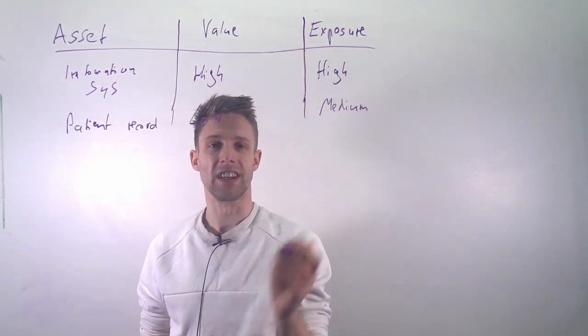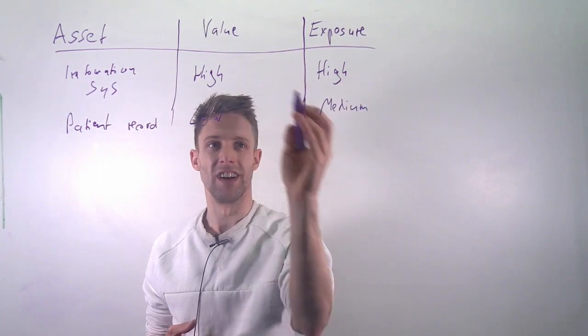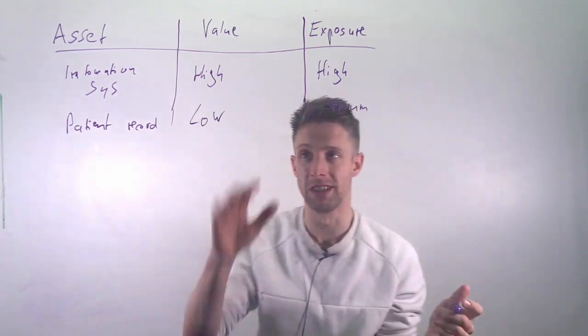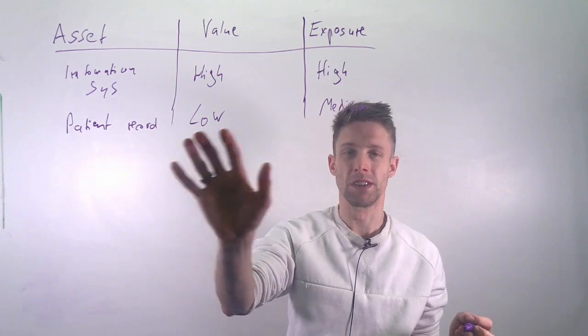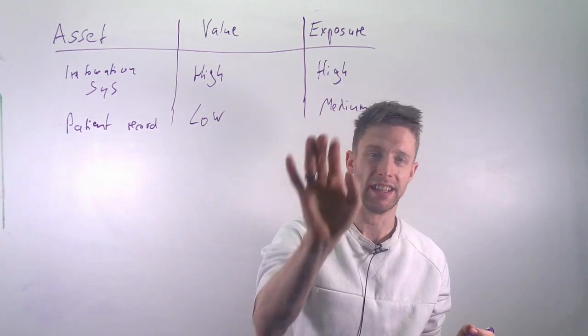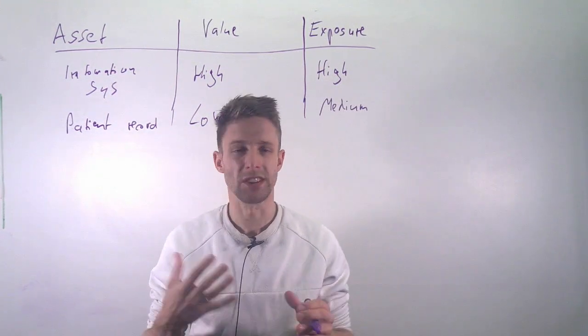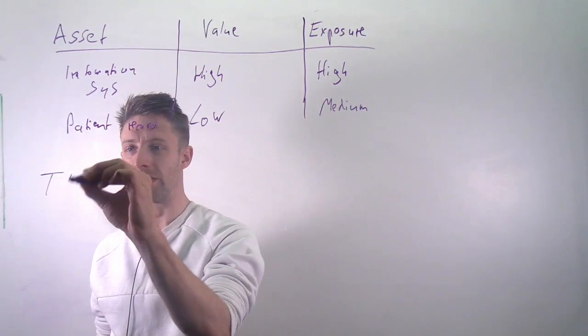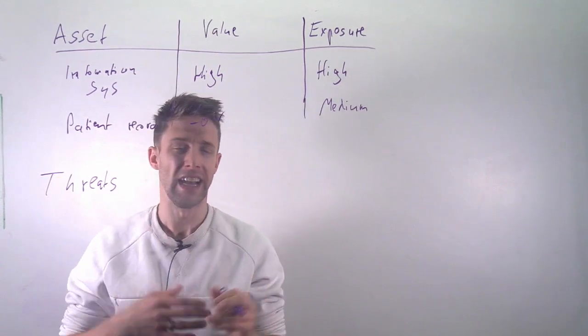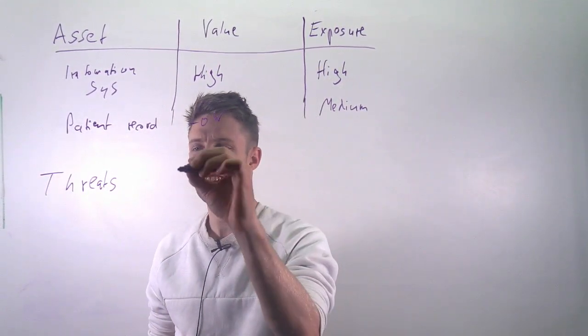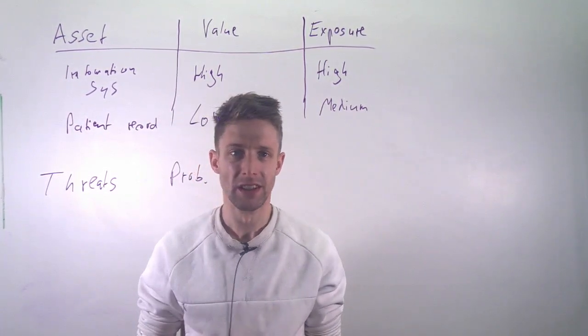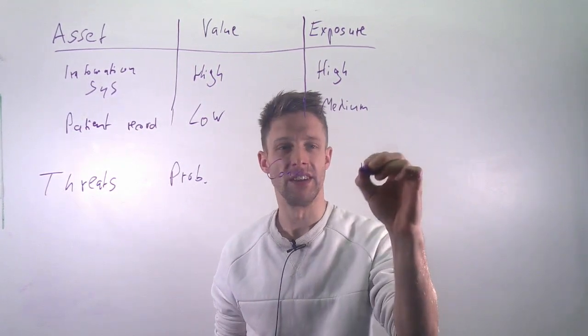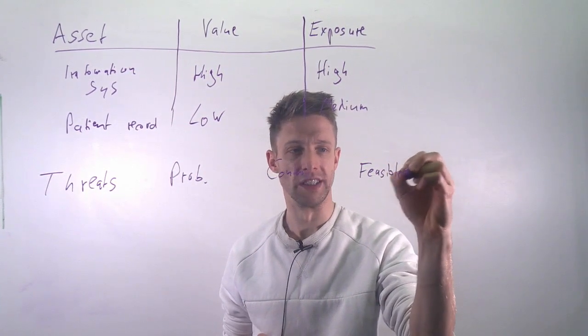And what you look at here is essentially are there any values that are very high that we need to look at. So definitely we need to protect our information system somehow because that's high and high. Here, maybe we don't want to protect as much, but we still want to think about is there a good way of protecting this so that we can lower the risk that this actually happens. And that's then, in a way, a second table where you start thinking about what different threats are we having? What different attack possibilities are there? What is the probability that they are happening? So what's the likelihood? How can we control this threat? So what can we do against it? And then you can also think about how feasible is this actually?